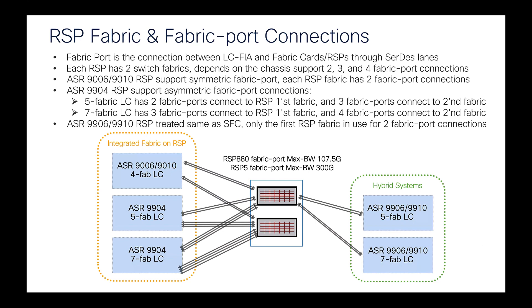On the ASR9904, it supports asymmetric fabric port connections. When a five-fabric line card is connected, the first RSP fabric supports two fabric ports and the second RSP fabric supports three fabric port connections. When a seven-fabric line card is inserted into the ASR9904, the first RSP fabric supports three fabric port connections and the second RSP fabric supports four fabric port connections. In the ASR9906 and 9910, the RSP is treated as a normal SFC card, so only the first fabric in the RSP is used, with two fabric port connections to the line card.